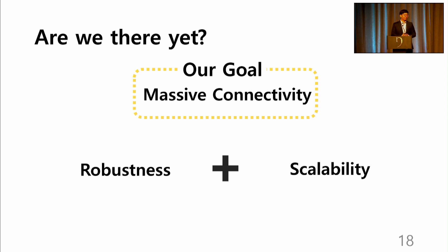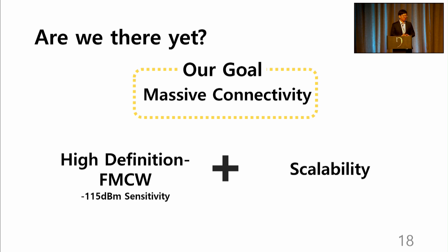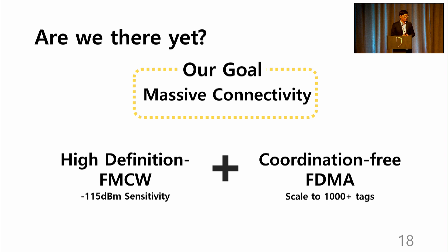At the end of the day, we want to achieve massive connectivity. With HD-FMCW, we have achieved robustness for pervasive deployment of tags. Now, we need a method to achieve scalability. Achieving scalability at Omniscatter is made possible by the coordination-free FDMA. This is a design that scales to thousands of concurrent tags by utilizing the large millimeter wave bandwidth.